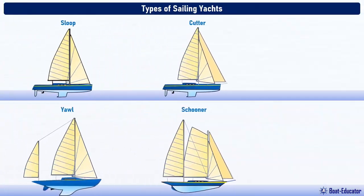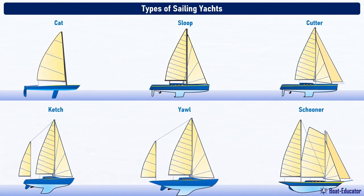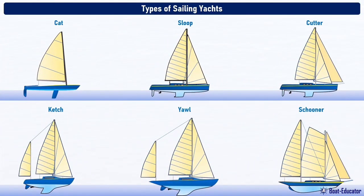Here are the common types of sail yachts: a catboat, sloop, cutter, ketch, yawl, and schooner.